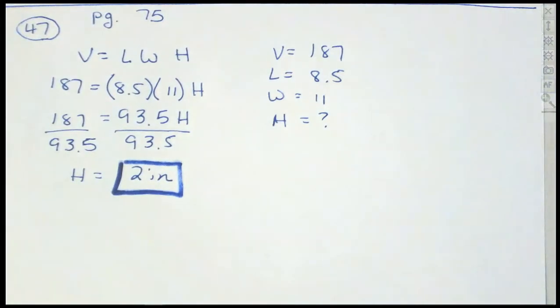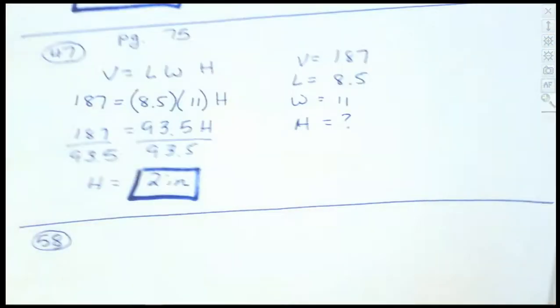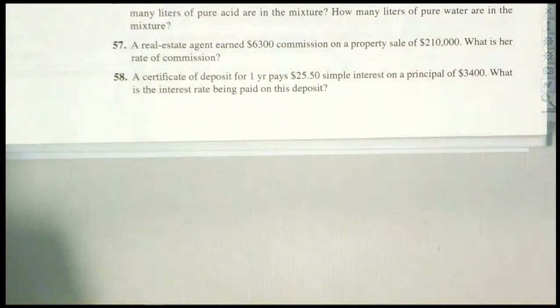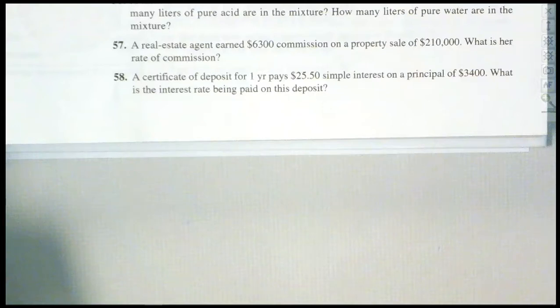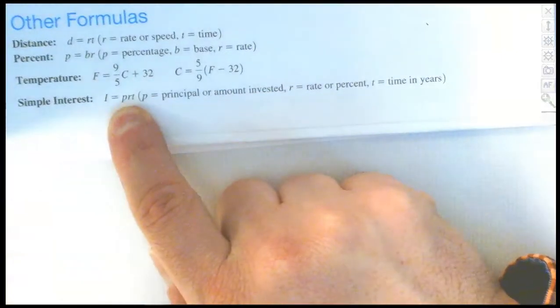Let's look at question 58, which involves interest. A certificate of deposit for one year earns $25.50 in interest on a principal of $3,400. What is the interest rate being paid on this deposit? We need another formula, so we go to the back cover of our book. We want simple interest: I = PRT.